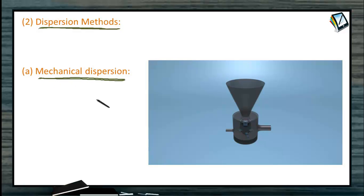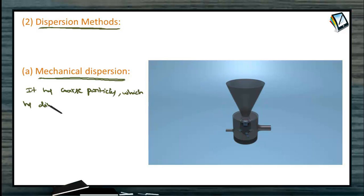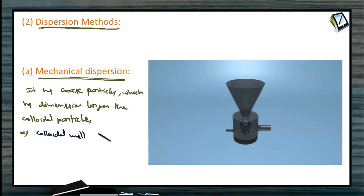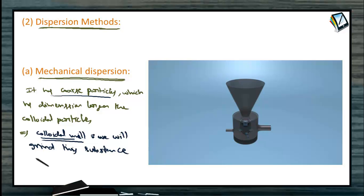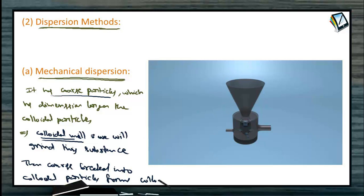The first dispersion method is mechanical dispersion. The substance initially has coarse particles — bigger than suspension particles — with dimensions larger than colloidal particles. The substance is ground in a machine called a colloidal mill. In the colloidal mill, the substance with coarse particles is ground at up to 7000 revolutions per minute. The coarse particles break into smaller particles of colloidal size, forming the corresponding colloidal solution.